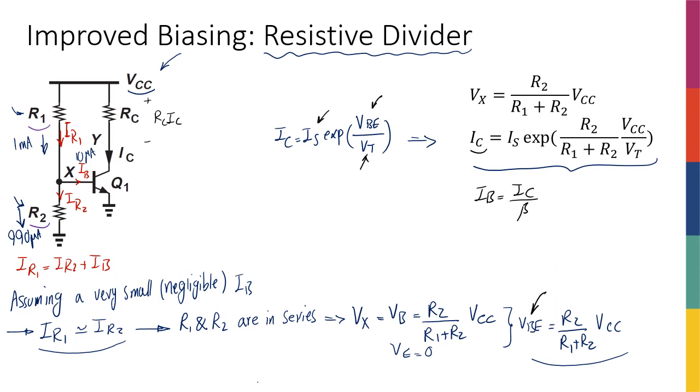Therefore, Ic is actually the most critical parameter that I care about in my transistor, or in my transistor analysis, and it is independent of beta.